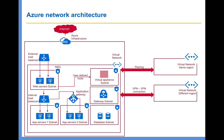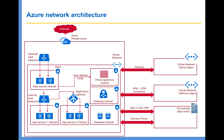You can also connect your on-premise data center network with this virtual network. The first option is site-to-site VPN, using which you can connect your on-premise network over the internet with an Azure virtual network. However, if you want that connection to be private, then you can go for ExpressRoute. ExpressRoute is a bit more costly when compared to site-to-site VPN. I'm going to explain these capabilities in detail in their own dedicated lectures.